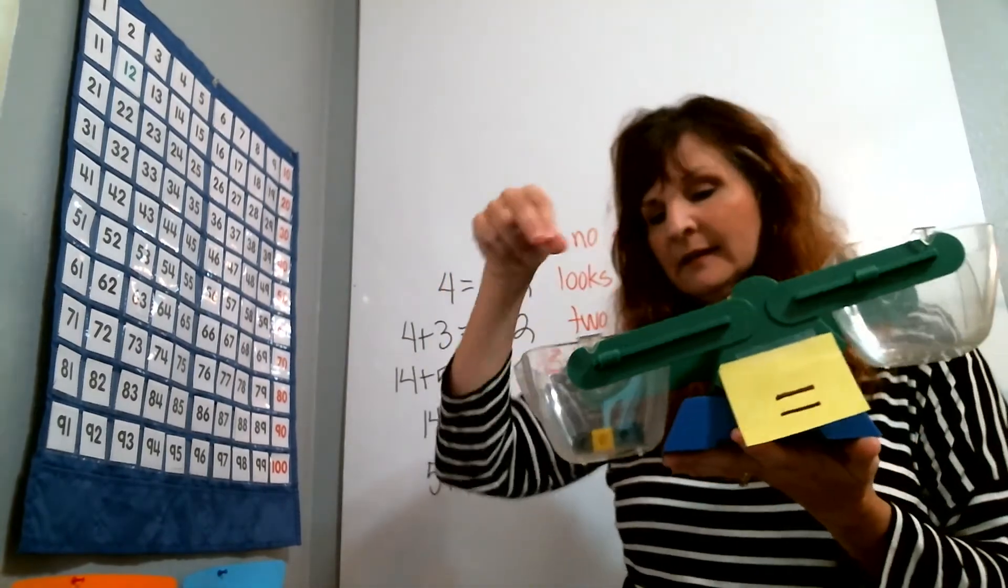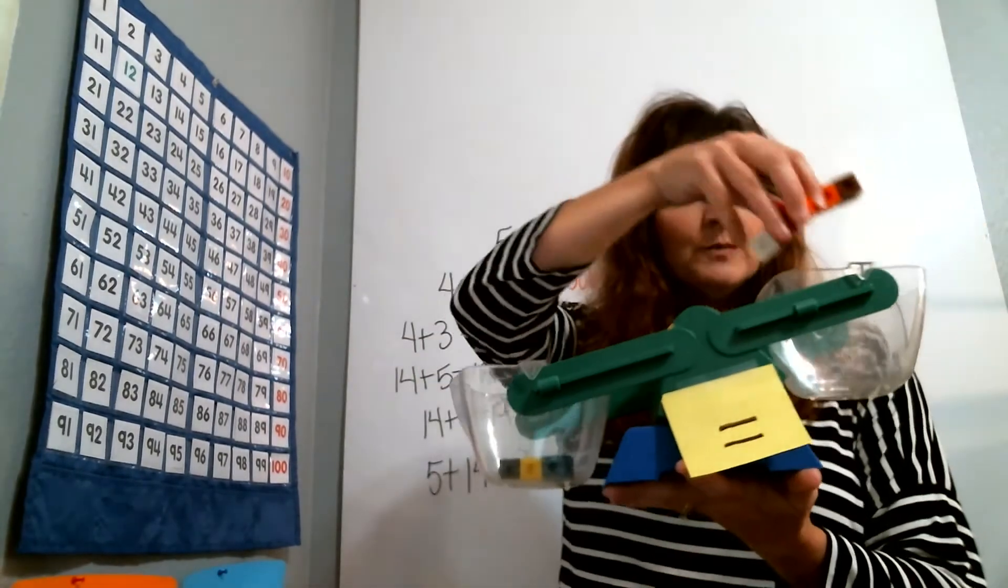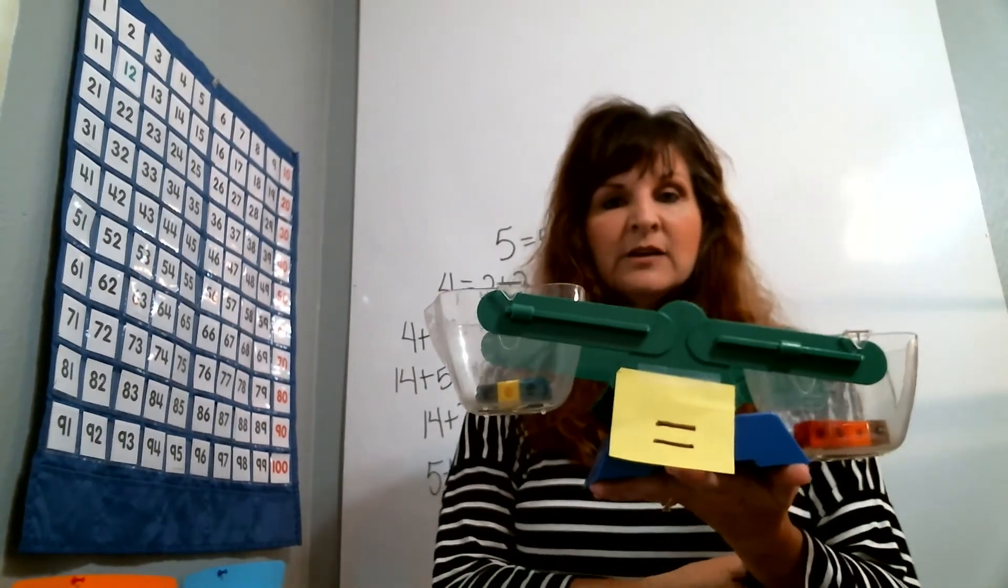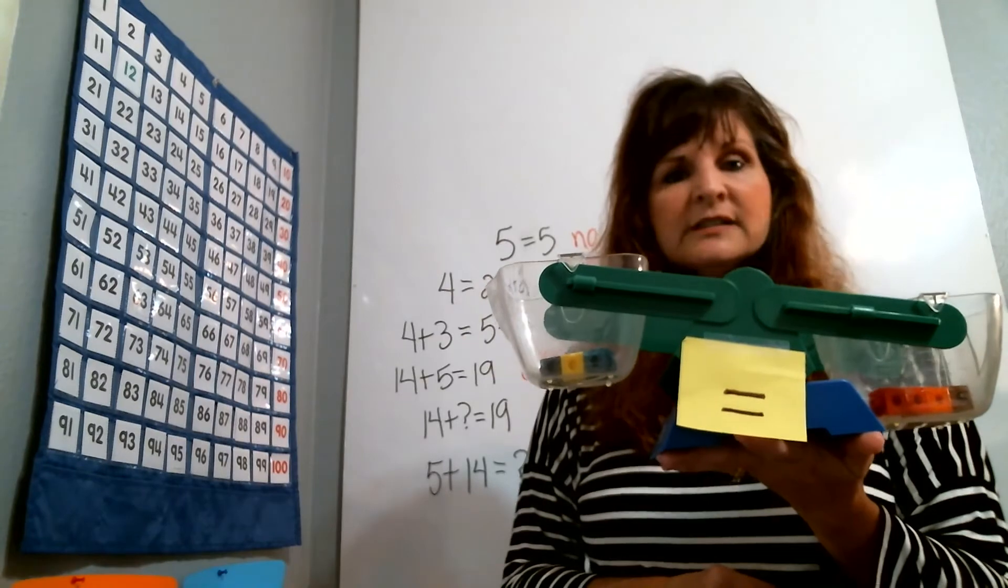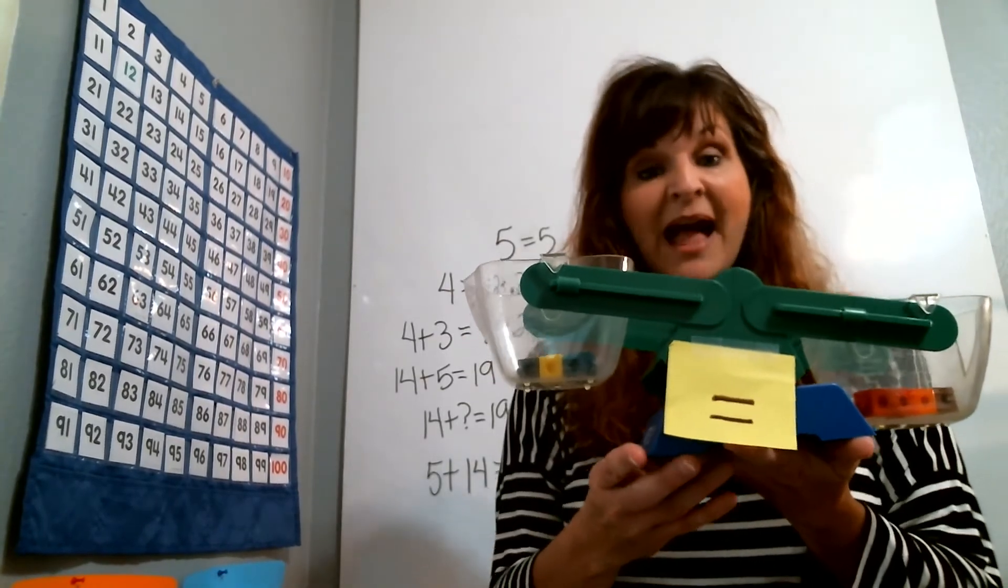I've got three cubes here. I've got seven cubes here. Oh my goodness. And you can say, are they equal? Oh no, it's not fair. They don't have the same amount. Is it balanced?